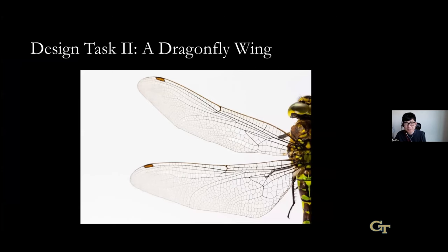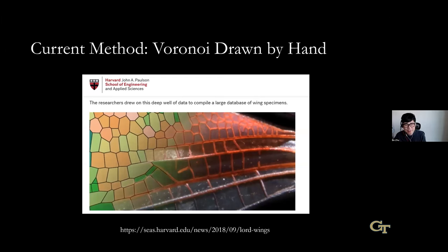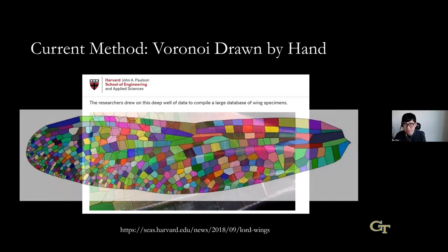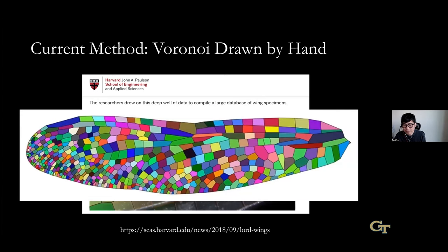The next example is how to design a dragonfly wing — a very thin structure exhibiting very organic patterns. A Harvard group systematically studied dragonfly wing patterns by observing real-world data and analyzing the relation between dragonfly wings and Voronoi patterns. This research gave insight into why dragonfly wings grow this way, but it wasn't a computational tool for engineering because there's no differentiable representation connecting Voronoi diagrams to the design problem. We solve this by building a differentiable representation for the Voronoi diagram.